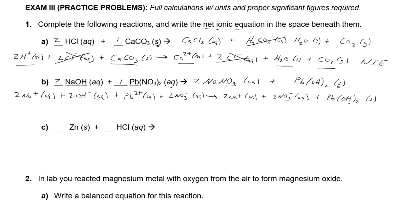Canceling spectators: sodium ions appear on both sides — cancel them. Hydroxide is locked into the precipitate on the product side, so it can't cancel. Lead can't cancel. Nitrate ions appear alone on both sides — cancel those. What's left is the net ionic equation: hydroxide ions react with lead two-plus to form the lead hydroxide precipitate. Make sure you check yourself as you go along to avoid mistakes.